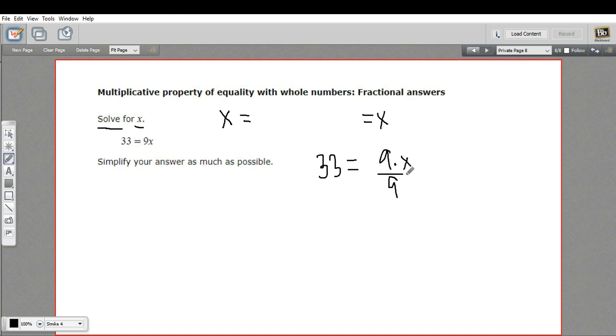If I do that to this side of the equation, I have to do it to this side of the equation. So we've got 33 divided by 9 equals 9x divided by 9. On this side, the 9s cancel. This would be 1 times x or just x. And that's exactly what we want. We've got the situation where x is alone on one side of the equation.